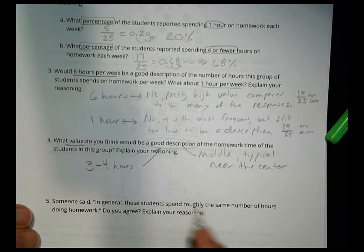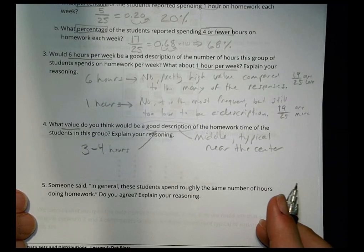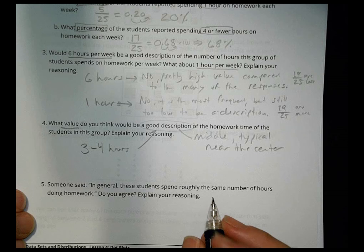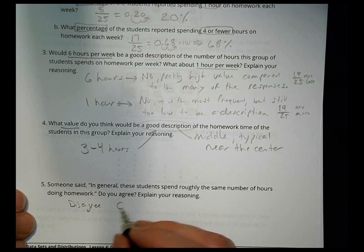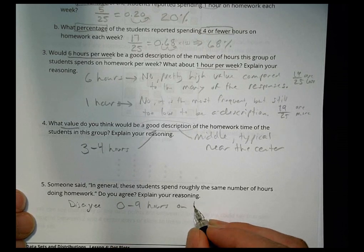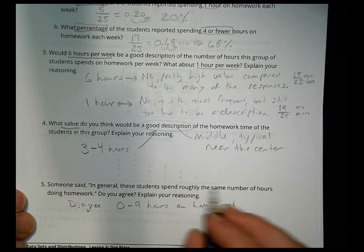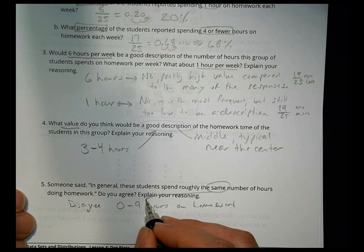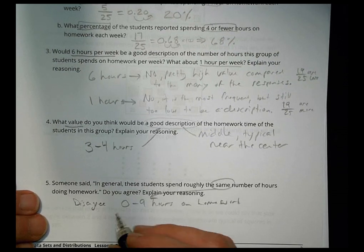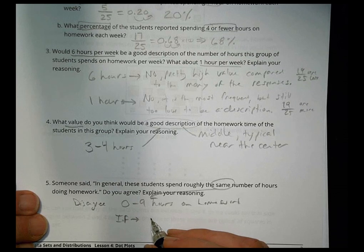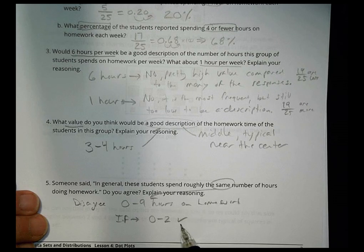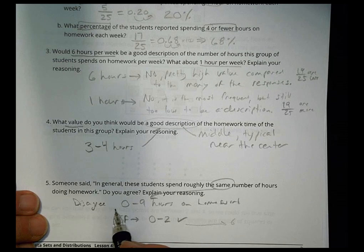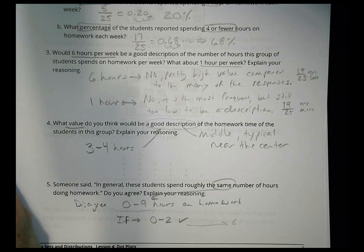Someone said, in general, these students spend roughly the same number of hours doing homework. Do you agree? Well, I do not agree. I would disagree. Again, looking at our table, we had numbers from 0 to 9 hours on homework. So to say that's roughly the same, 0 to 9 hours is definitely not the same. If it was like the pizza toppings, and you're talking about 0 to 2, that would be pretty much the same. Not a huge difference there, especially when you consider that could go all the way up to 6. So 0 to 9 is not going to be the same, it means there's a lot of variability in the amount of time that students spend on their homework.